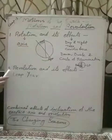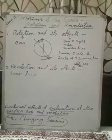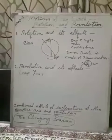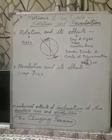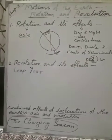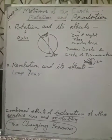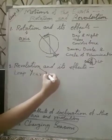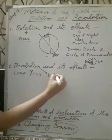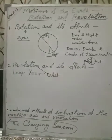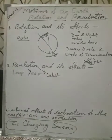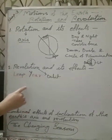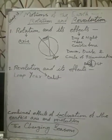Now, the second motion, revolution and its effects. What is the meaning of revolution? Revolution means when Earth revolves around the sun on its own orbit. So, here important word is orbit. That is called revolution.